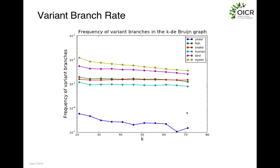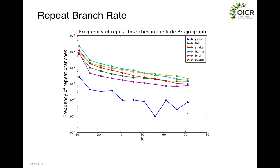You can see that the oyster is at about 100 frequency of variant branches, which corresponds to its every-100-base-pair SNP rate. Humans are about 1 in 1,000, and yeast is used as a control because it's not supposed to have any variant branches. You can also model your repeat branch rate to see the frequency of repeated branches based on different k-mers. As your k-mers get longer, your repeat branch rate begins to fall, but because humans have a lot of long repeats in our genome, we're still higher than all the other organisms. The organisms chosen include yeast as a control, and human, snake, fish, and bird from the Assemblathon competition, with oyster used as the worst-case scenario.